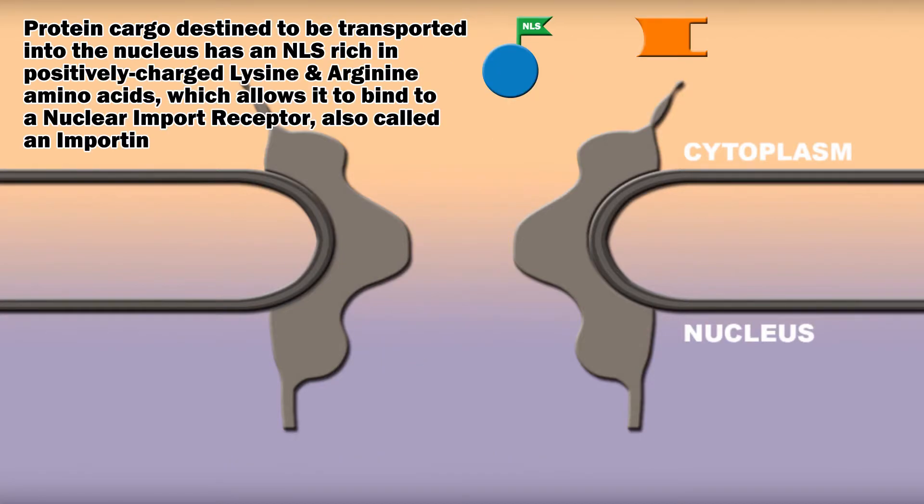Protein cargo destined to be transported into the nucleus has a nuclear localization signal rich in positively charged lysine and arginine amino acids, which allows it to bind to a nuclear import receptor, also called an importin.